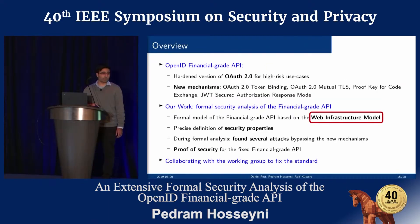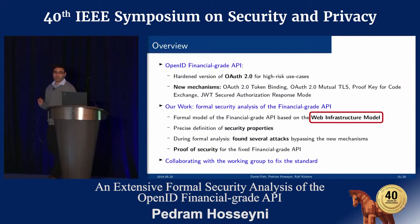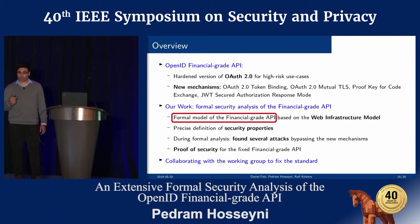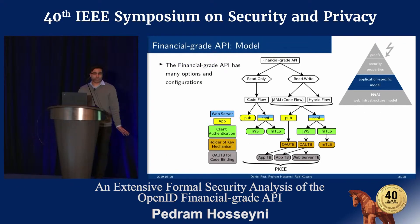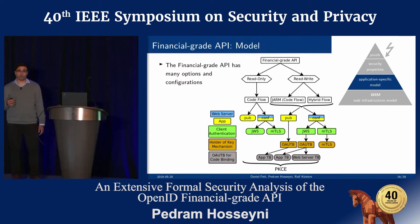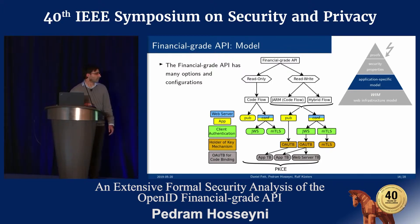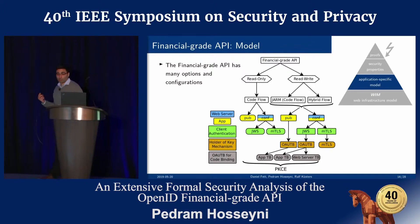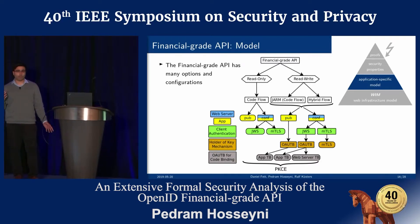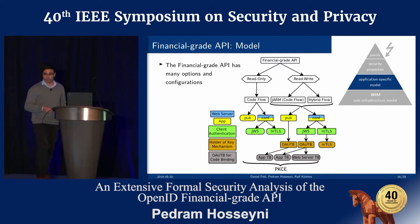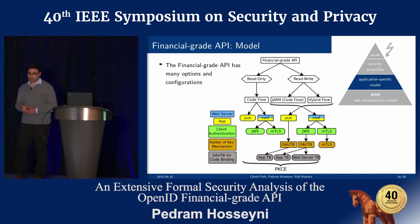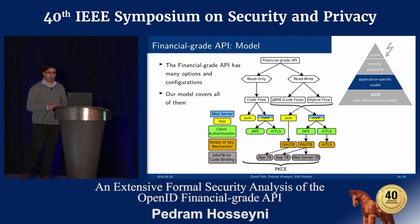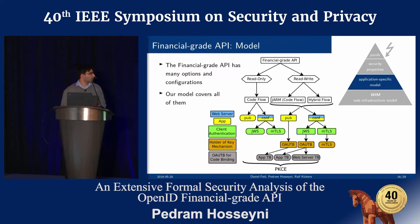We modeled the Financial Grade API, which has many different options and configurations. The Financial Grade API offers a profile for read-only access and a more secure profile for read-write access. There might be web server or application clients, and the flow depends on this. There are multiple methods of client authentication and multiple methods of holder-of-key mechanisms. We modeled all possible methods.